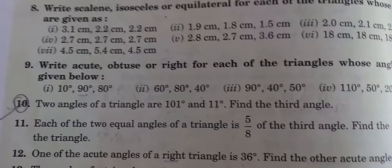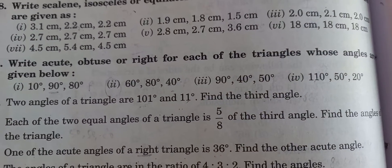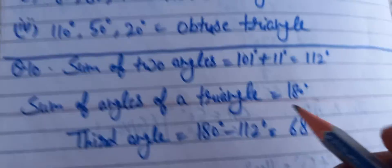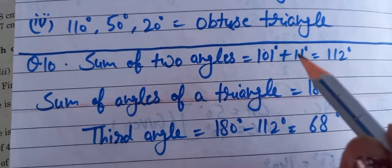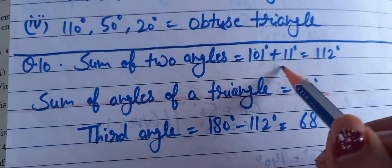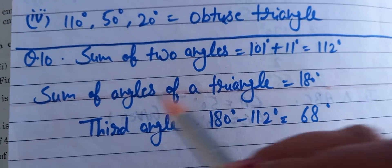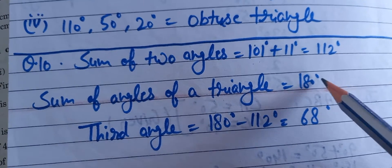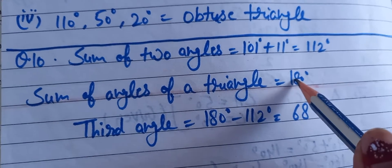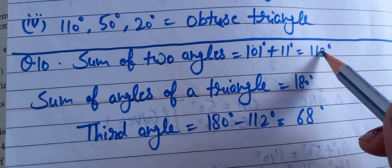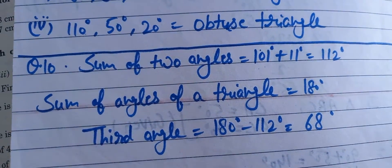Question number 10: two angles of a triangle are given — 101 degrees and 11 degrees. Adding both gives 112 degrees. The sum of angles of a triangle is 180 degrees. To find the third angle, subtract 112 from 180, giving the third angle as 68 degrees.